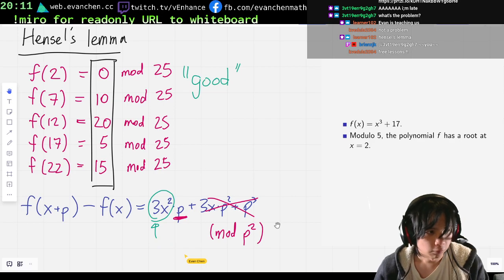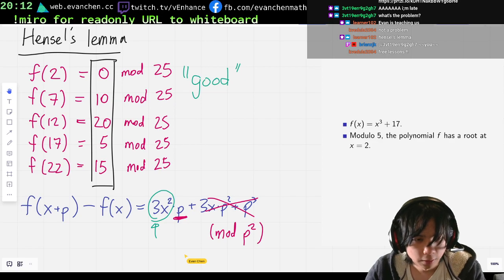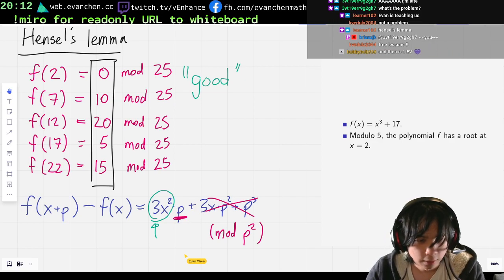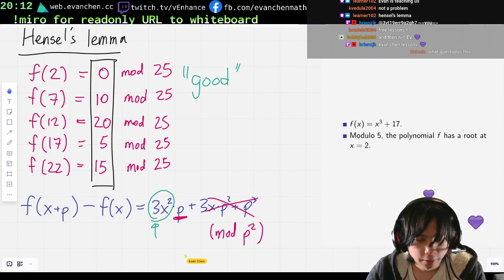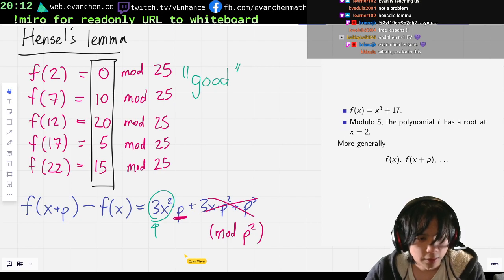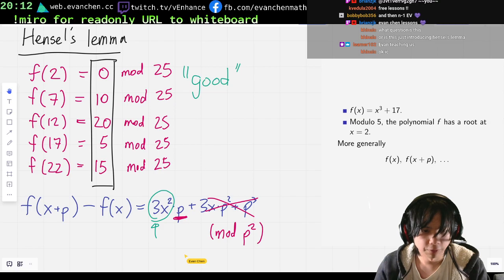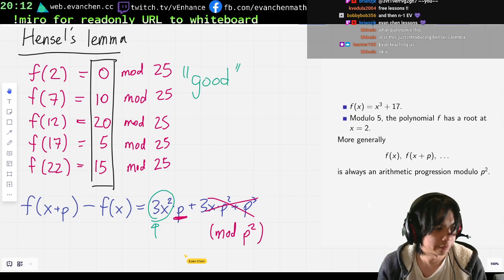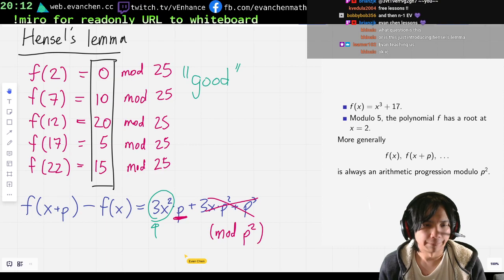And more generally, what will always happen is f of x, f of x plus p, and so on. This thing, this is always an arithmetic progression modulo p squared. So if x is a root, then f of x plus p, f of x plus 2p, and so on. Because of this calculation, you get like p times the thing that has a fixed value modulo p. So yeah, always a p.